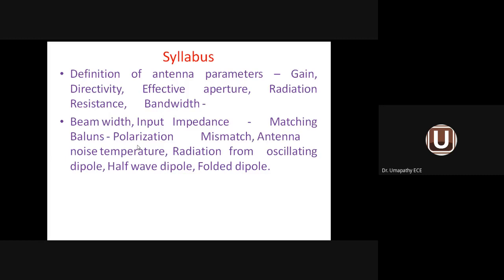For linear polarization, two components must have equal amplitude and equal phase. It is divided into horizontal polarization and vertical polarization, which describe the orientation of the electric or magnetic field in the vertical or horizontal plane.